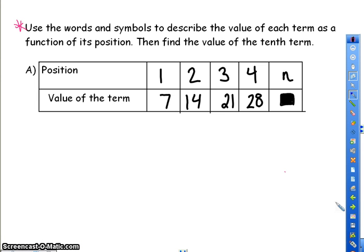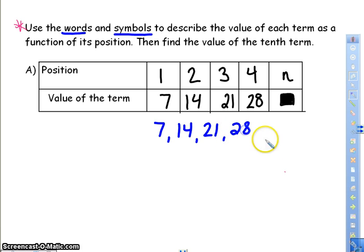Our first problem says use words and symbols to describe the value of each term as a function of its position. Then find the value of the 10th term. So I'm supposed to use words and symbols. I see my position, 1. Position 1 is 7, and I like to write it out like this. 14 is my second number. 21 is the third. 28 is the fourth.